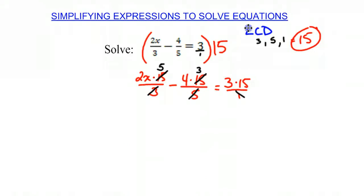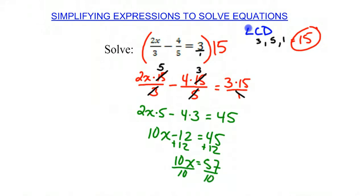It'll be the same as whatever the numerator is. So we're going to rewrite this as 2x times 5 minus 4 times 3 equals 3 times 15 is 45. We're going to simplify. 2x times 5 is 10x minus 4 times 3 is 12 equals 45. Then we're going to add 12 to each side. So we get 10x equals 57. We're going to divide both sides by 10. So x equals 57 divided by 10. We can't simplify that anymore, so we leave it as that fraction.